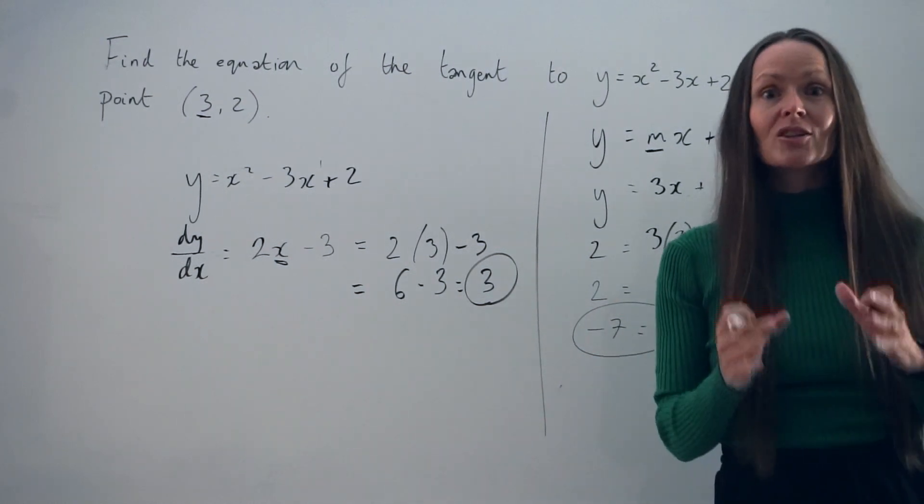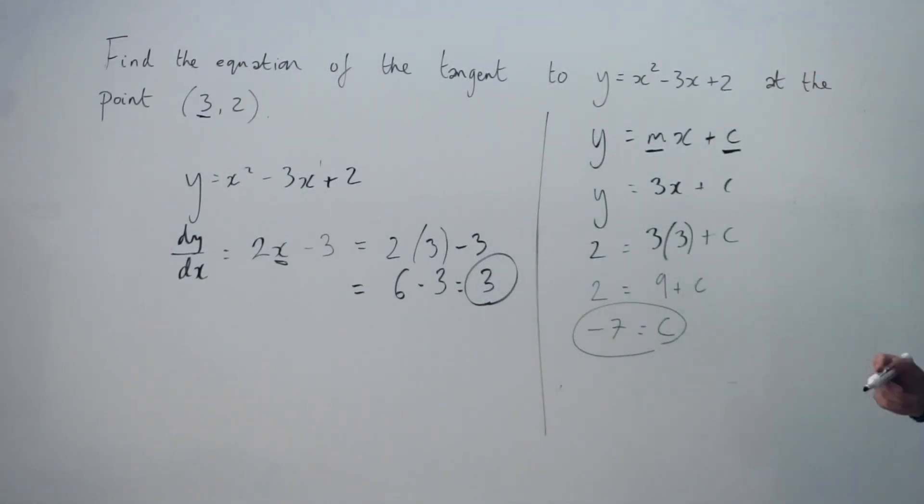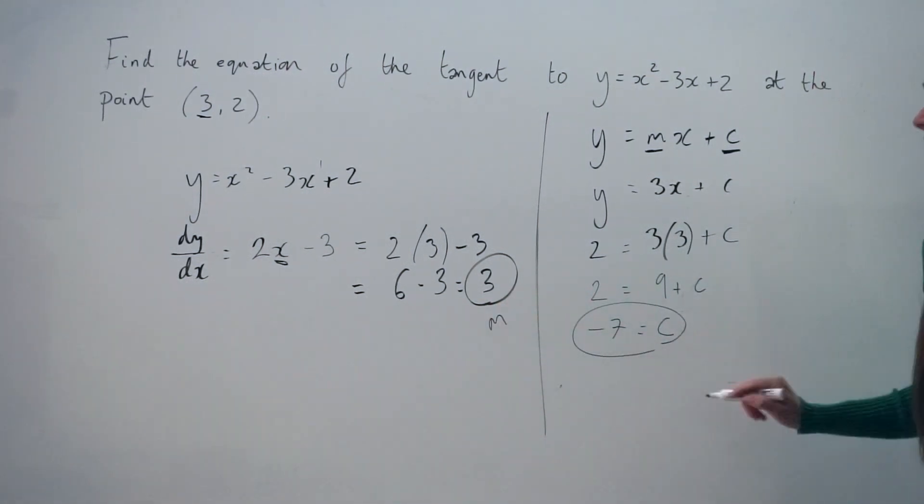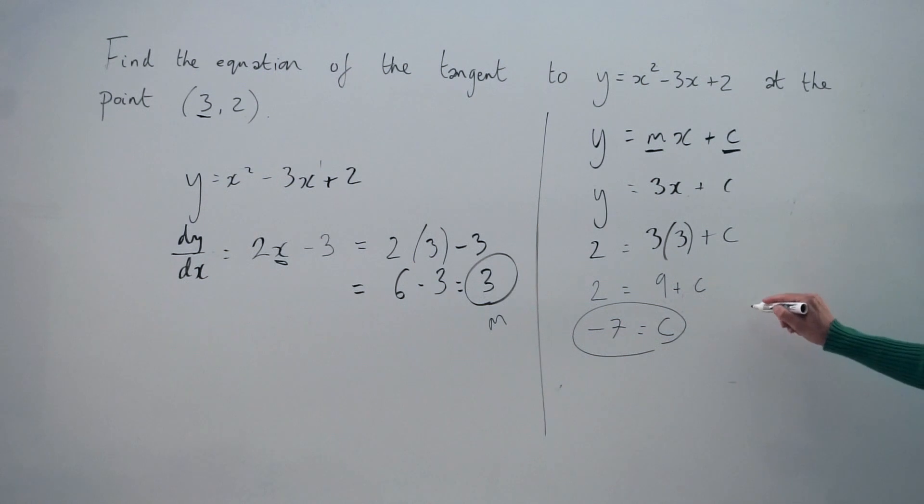So now we can put it all together to write down the equation of the tangent. We have the gradient, which was m. We have the y-intercept c, which is minus 7. So we have y equals 3x minus 7.